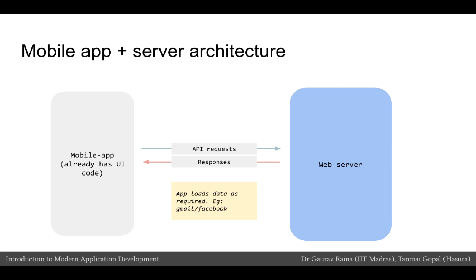A mobile app works a little differently. A mobile app is downloaded on a mobile phone and it already has the UI code, so it does not need to make a request to the web server to fetch the UI code. However, a mobile app may make API requests to the web server, and the web server will respond with data that the mobile app can use to change its content dynamically.